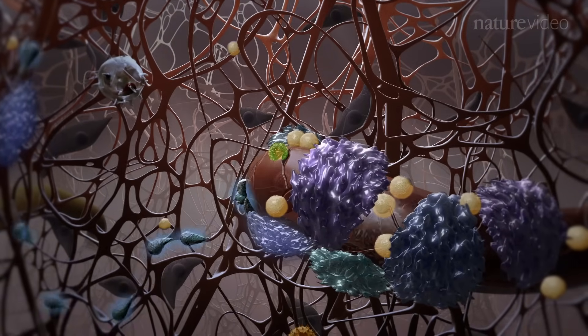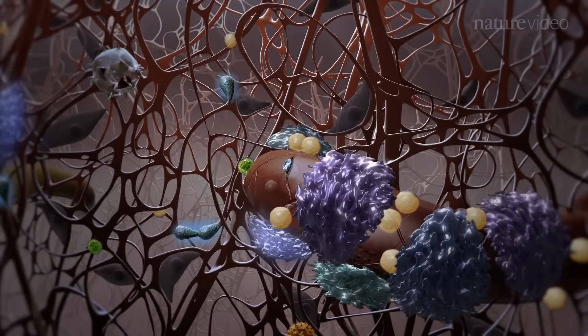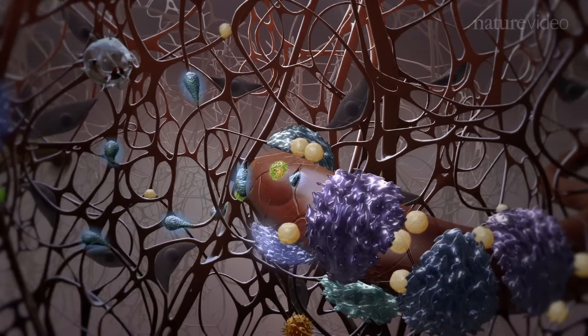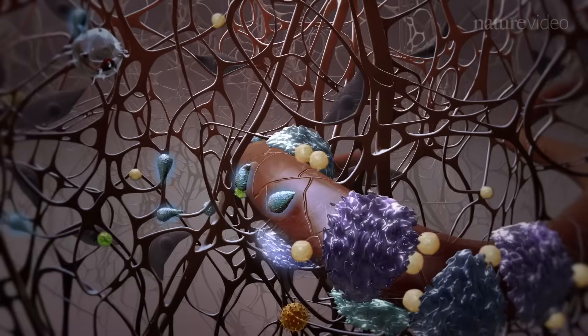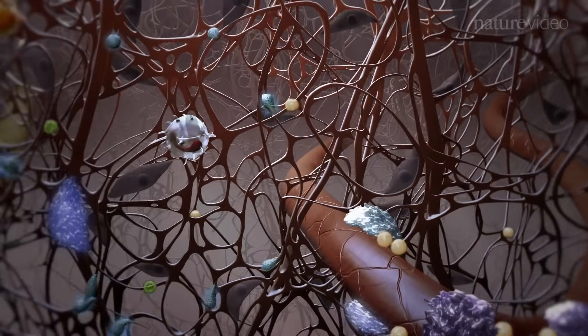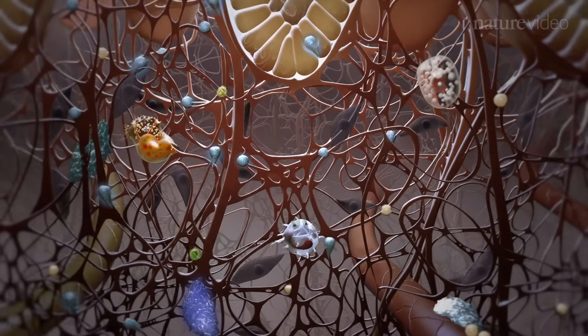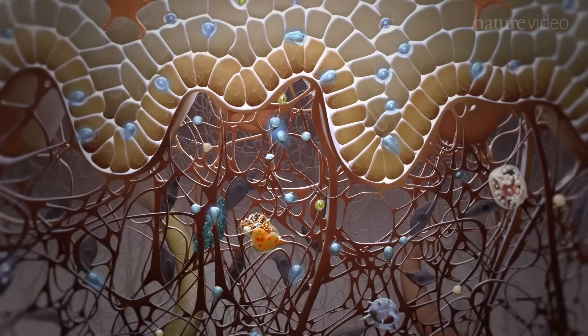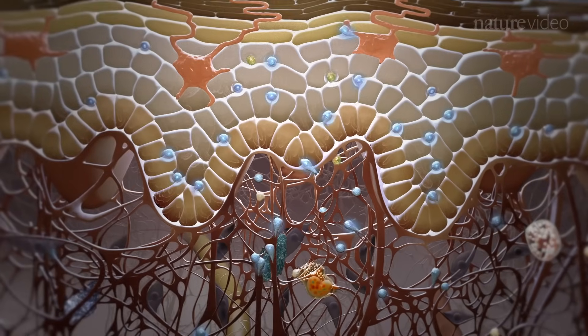The earliest recognizable change in the affected skin is the accumulation of T-cells and dendritic cells around blood vessels in the dermis. An overt lesion occurs when CD8 T-cells, dendritic cells and neutrophils infiltrate the epidermis.